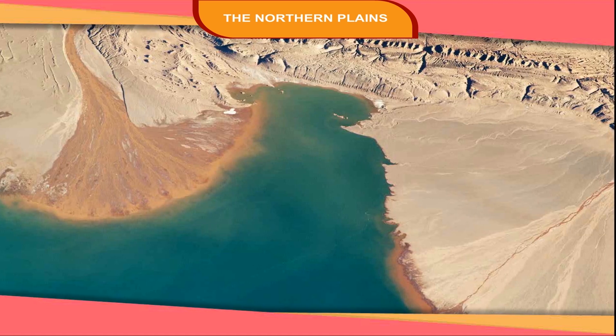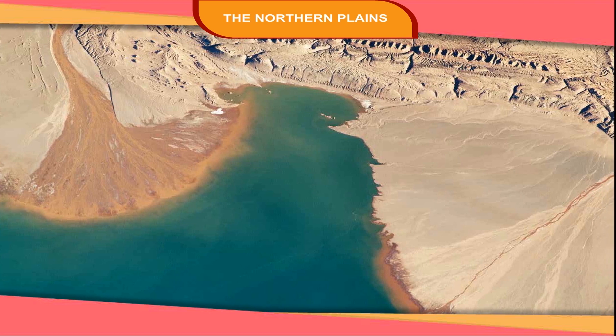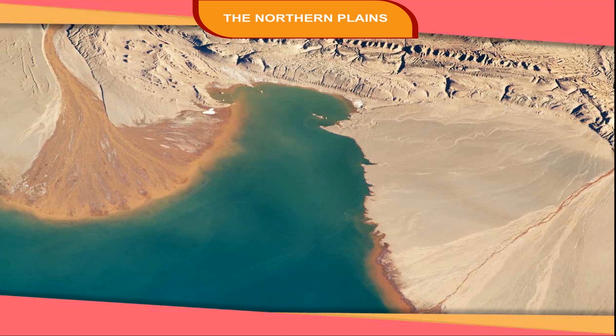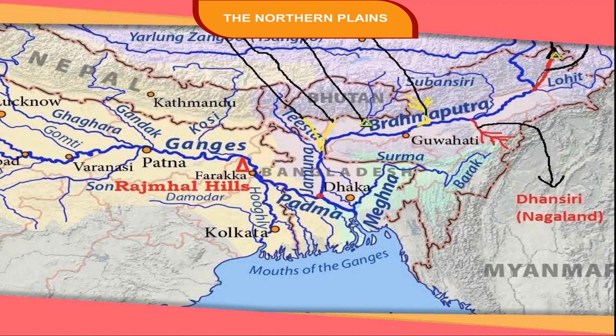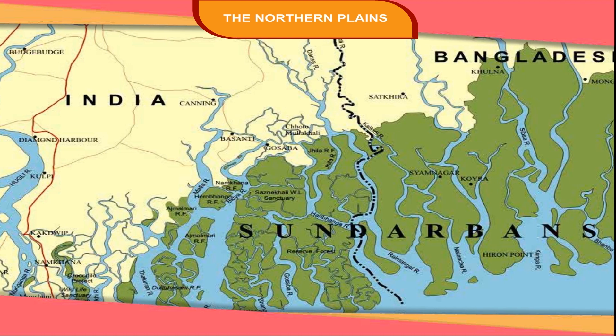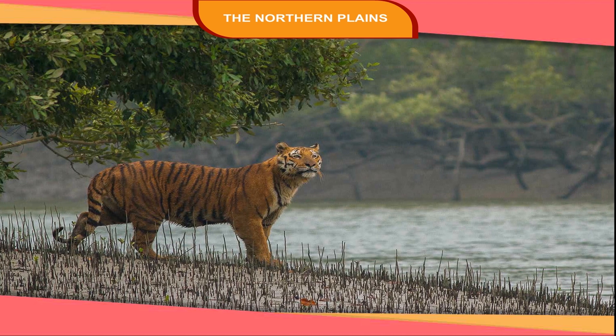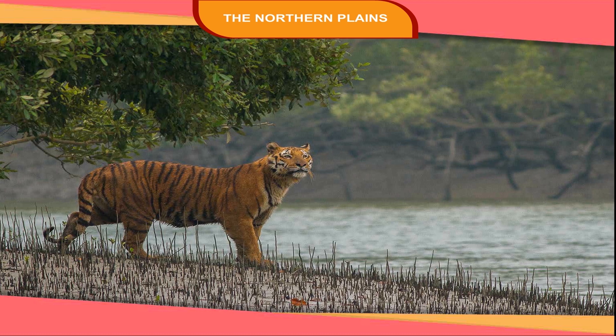The place where the river forms these islands and divides into distributaries is called a delta. The Ganga takes a sharp turn in the Rajmahal hills in Bihar and enters West Bengal, where it is divided into two streams. One is called the Padma, which flows through Bangladesh. The rivers Ganga and Brahmaputra meet in the Bay of Bengal and form a delta called the Sundarbans, which is the home of the famous Royal Bengal Tigers.